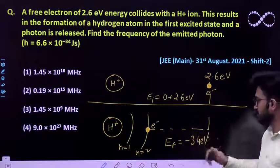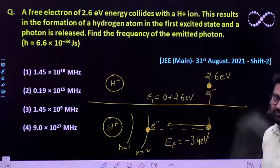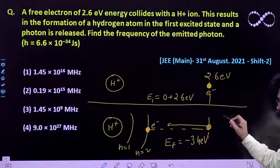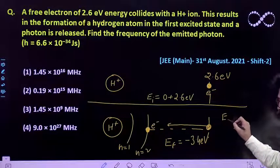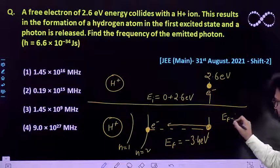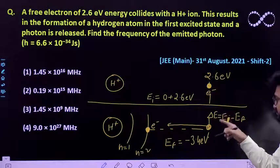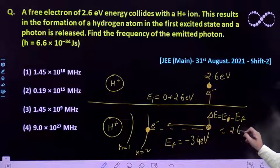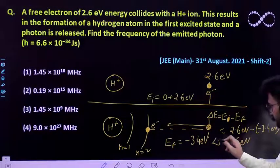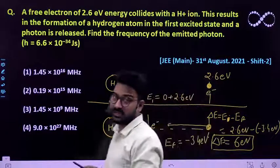There is a loss of energy, so the electron will release energy in the form of radiation. The change in energy — the total energy released — equals E initial minus E final, which is 2.6 electron volt minus (minus 3.4 electron volt), giving delta E equal to 6 electron volt.